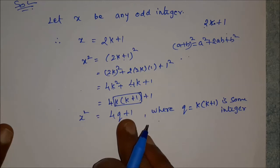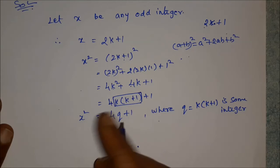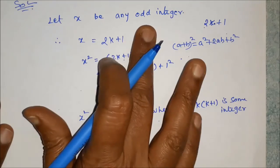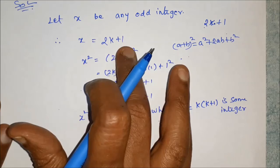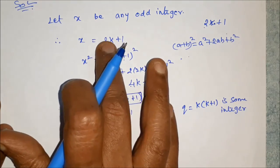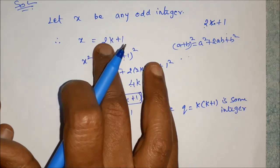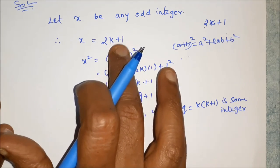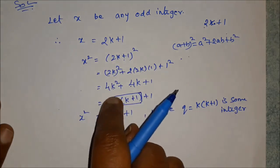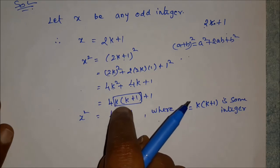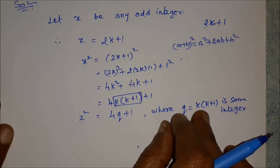So x squared equals 4K squared plus 4K plus 1, which equals 4K(K plus 1) plus 1. Let Q equal K times (K plus 1). Then x squared equals 4Q plus 1, which is of the required form.